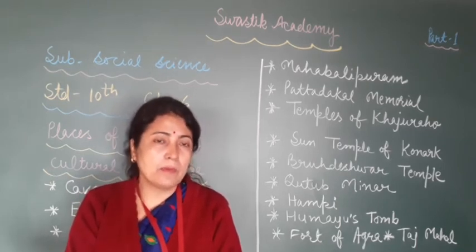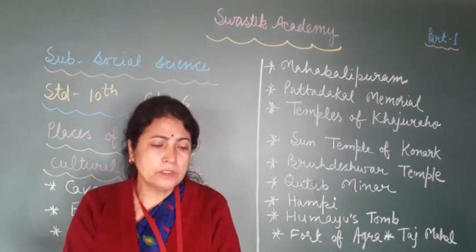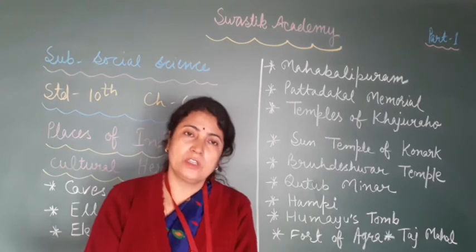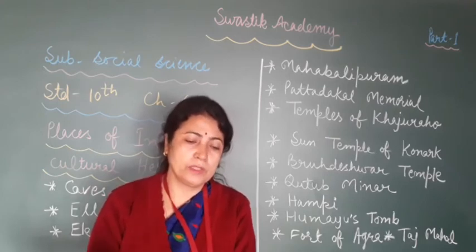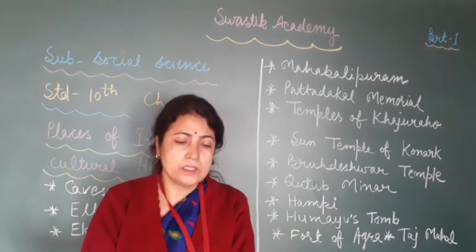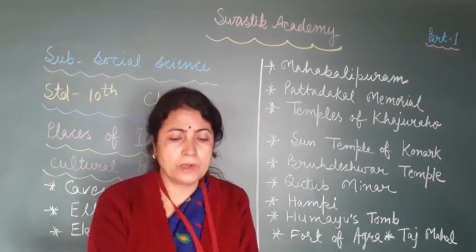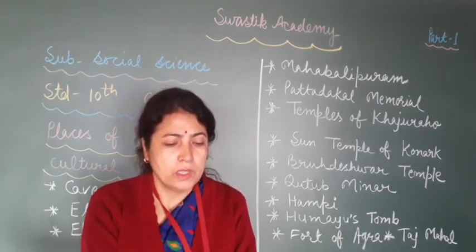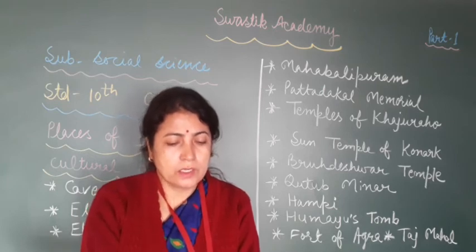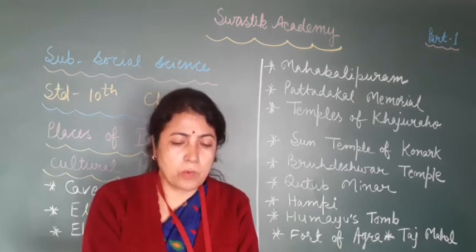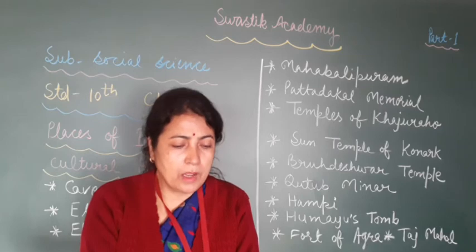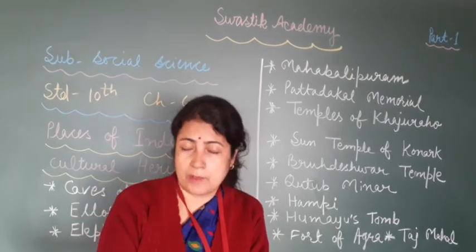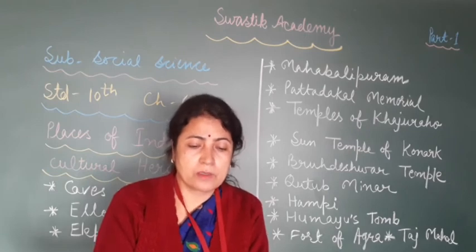Mahabalipuram is located 60 km away from Chennai. This city of Tamil Nadu is famous for its splendid temple architecture and seashore. Narasimha Varman I, who was popularly known as Mahamalla, belonged to the Pallava dynasty. Seven temples were built there during his time.